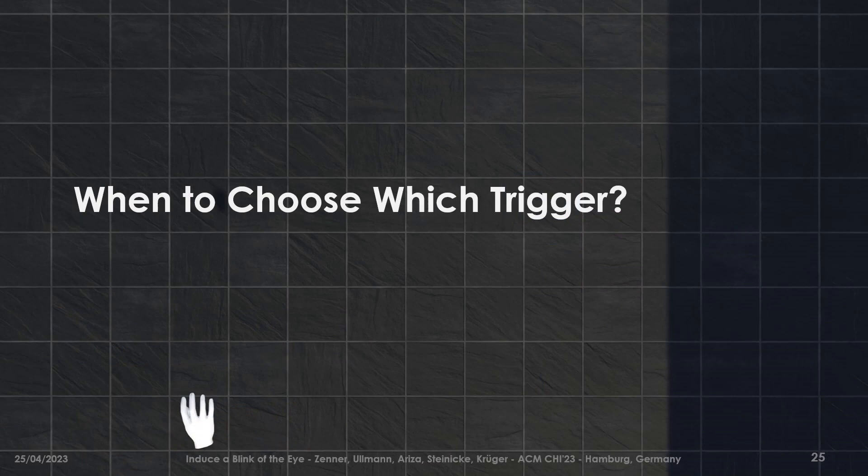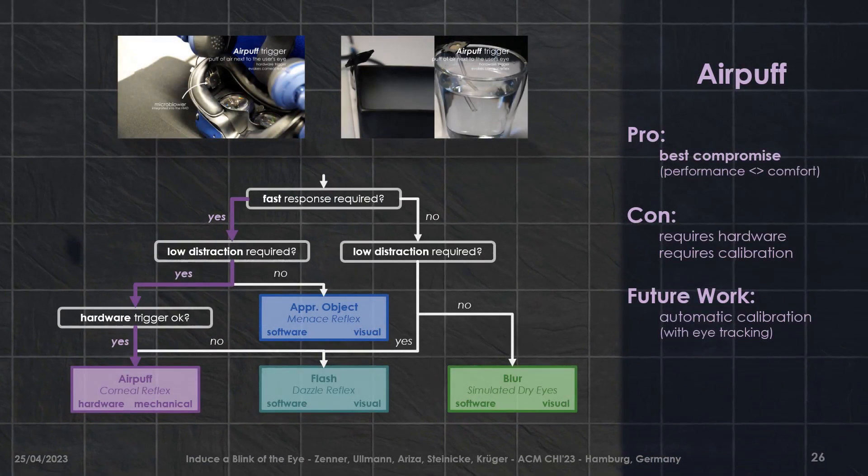We summarize our findings in a decision tree designed to help researchers and practitioners in finding the most suitable triggers for their VR use cases. Overall, we found the AirPuff trigger to constitute the best compromise between performance and comfort, with the downside of requiring additional hardware and per-user calibration. We recommend the AirPuff trigger when fast blink responses and low distraction is required. To improve its usability, future research should consider using eye tracking to automatically calibrate the air nozzle.